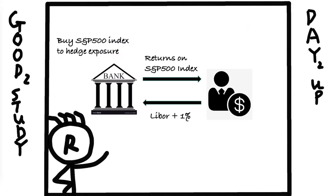If an investor wants to gain exposure on the S&P 500 index, they can either buy the index directly, or go to the bank and say: 'I want to gain exposure on the S&P 500 but I don't want to buy any stocks or ETF.' The traders at the bank would say: 'Sure, how about we set up a swap agreement. We will pay you the returns on the S&P 500 index, and in return you'll pay us LIBOR plus one percent.'